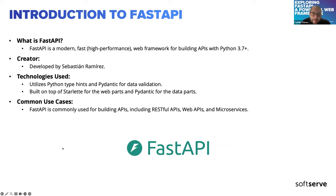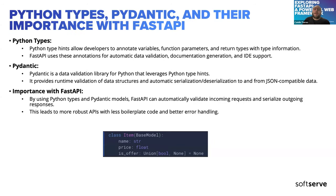FastAPI stands on two great frameworks — these are the two pillars: Pydantic and Starlette. Pydantic is used for data validation, and Starlette is used for the web parts and the asynchronous code. Because the two pillars of FastAPI are Python types and asynchronous code, we are going to cover a few of these points in the next slides.